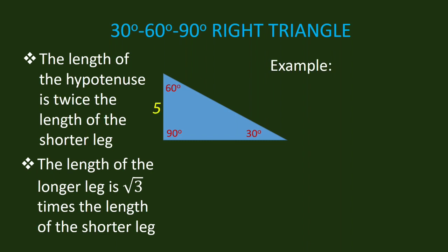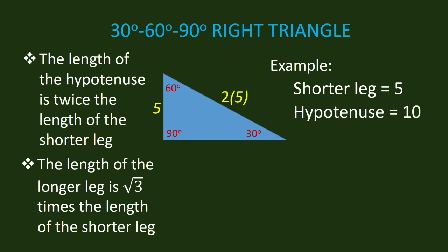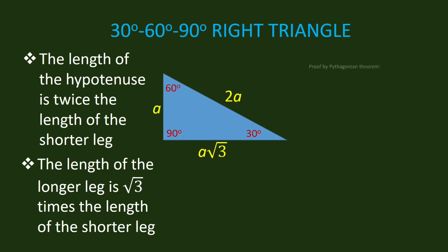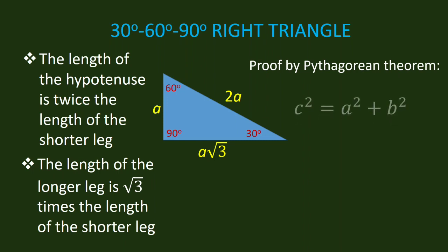For example, if A is equal to 5, then the hypotenuse is 2 times 5, or 10, and the longer leg is 5 times the square root of 3. Now let us prove this special right triangle using the Pythagorean theorem.